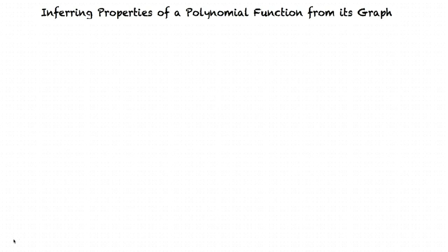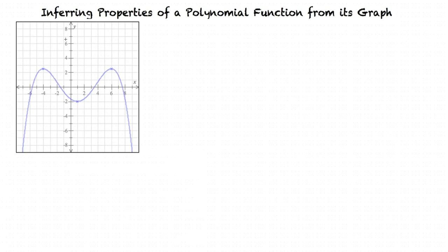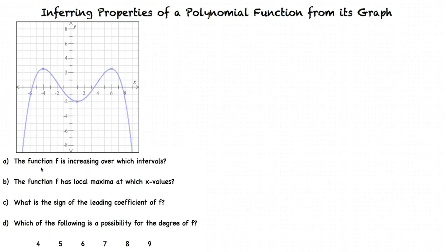Say we are given a graph that looks like this. Based on the graph of f, we will solve these four questions: the function f is increasing over which intervals; the function f has local maxima at which x values; what is the sign of the leading coefficient of f; and which of the following is a possibility for the degree of f?